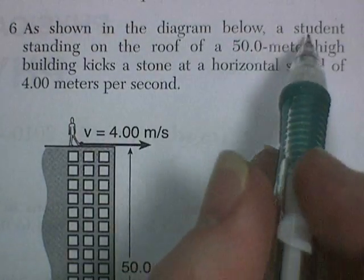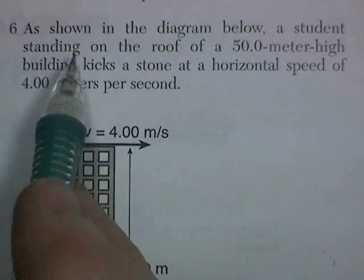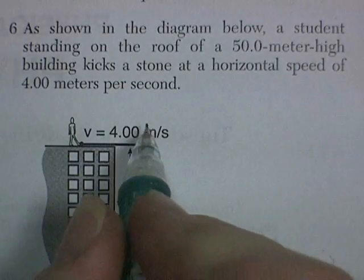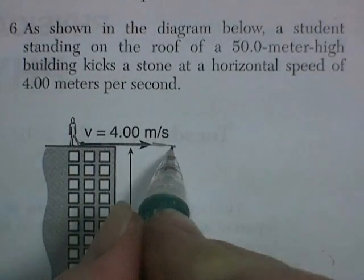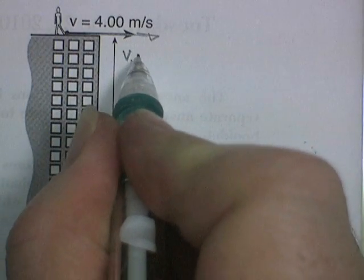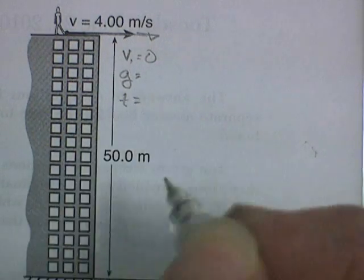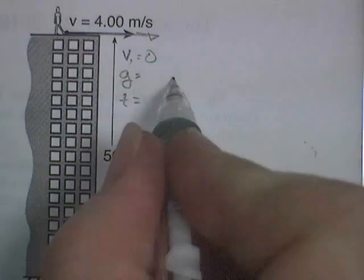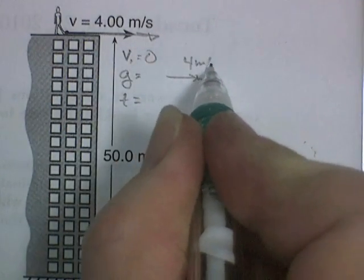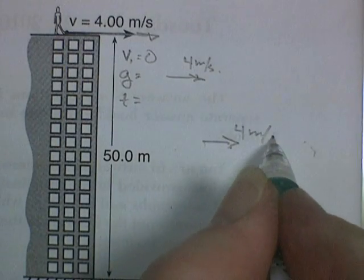Alright, question 6. As shown in the diagram below, a student standing on the top of a roof 50 meters high kicks a stone at a horizontal speed of 4 meters per second. Alright, two things will happen. Its initial velocity downwards is 0. It will be acted on by gravity. And it will continue to fall downwards for a period of time until it hits the ground. During that entire event, it will travel at 4 meters per second horizontally.